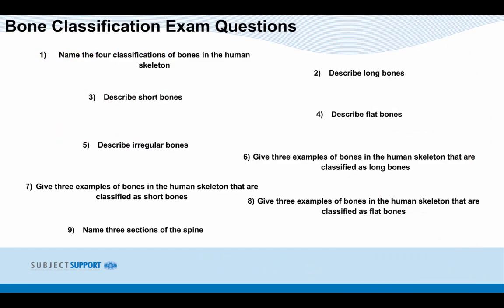Within the next lesson we'll be looking at the following exam questions. By the end of this video you should be able to answer: name the four classifications of bones in the human skeleton; describe long bones, short bones, flat bones, and irregular bones; give three examples of bones classified as long bones; give three examples of bones classified as short bones; and give three examples of bones classified as flat bones.